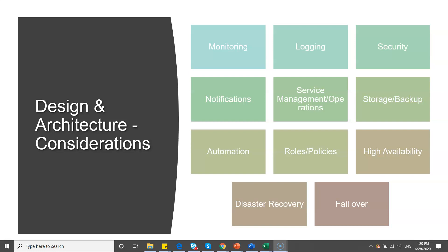Storage and backup: you should have a backup mechanism. If something goes wrong suddenly, you should have your VMs or SQL Server backed up regularly based on your RTO and RPO. Automation: you need to automate as many things as possible so that future enhancements are easy. For example, currently you are running three VMs but in future you may need six VMs based on increasing traffic, or you may need to spin up servers in another region.